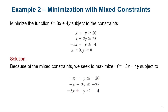For instance, we've got the function F equals 3X plus 4Y and we're trying to minimize that subject to these constraints. Because of the mixed constraints, we're going to try to maximize the opposite function — multiply everything by negative one because we maximize the opposite to minimize the original. Then we change the inequality constraints by multiplying through by negative one to make everything a less than or equal to.